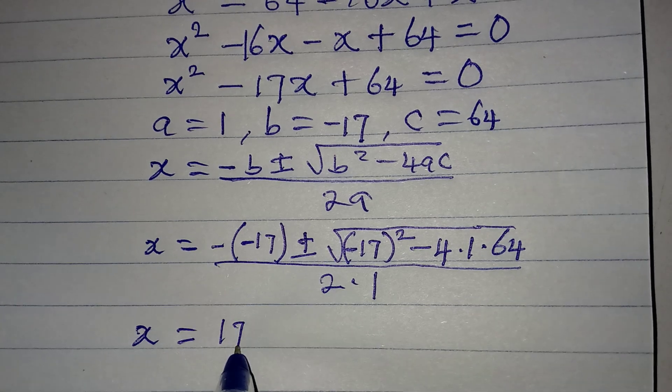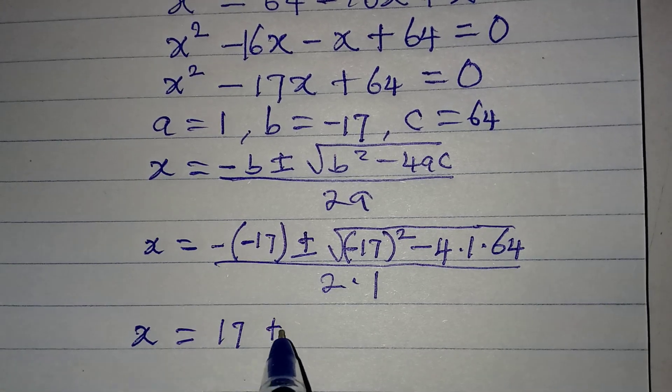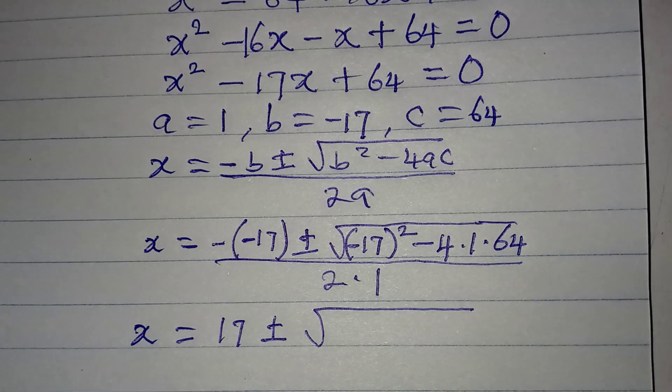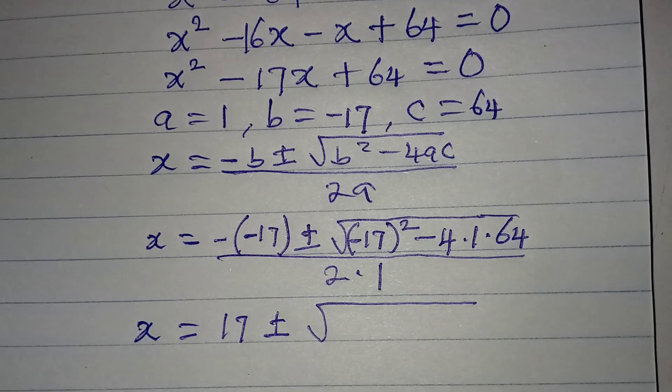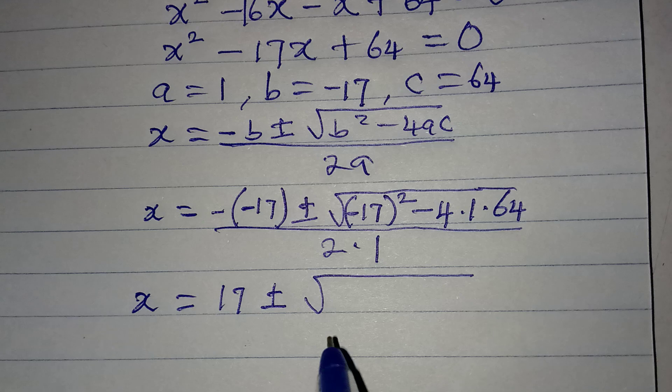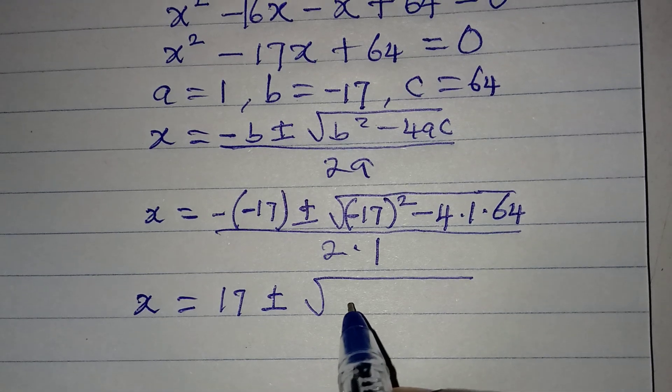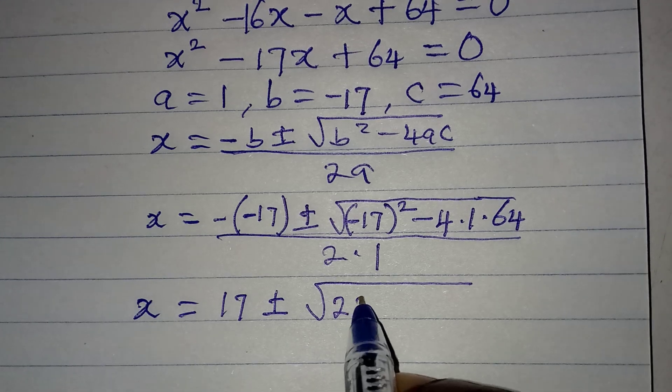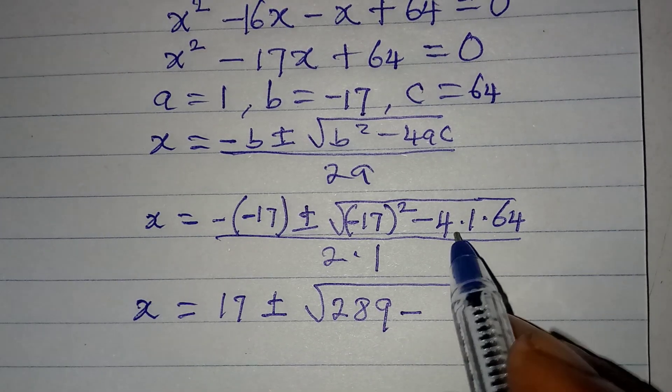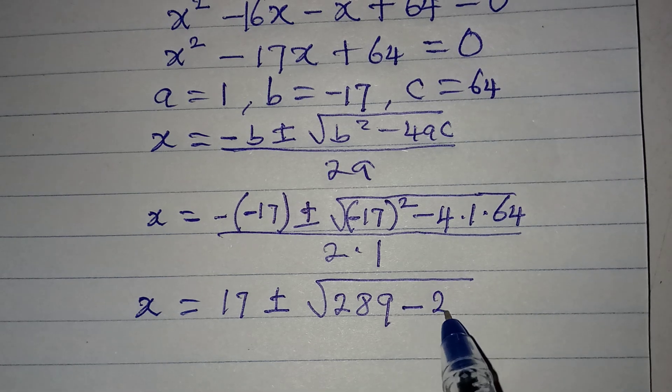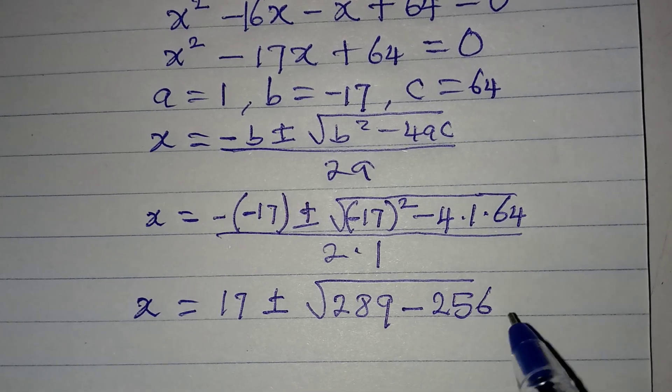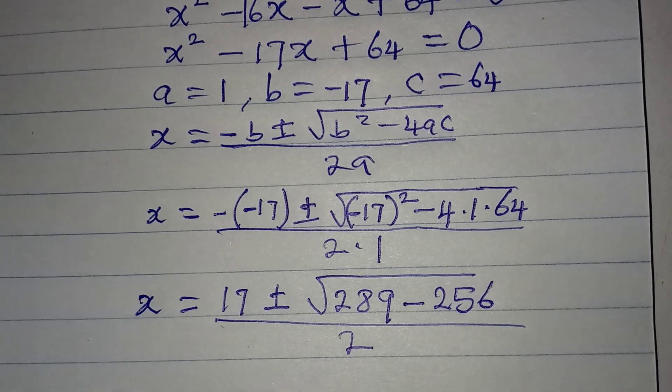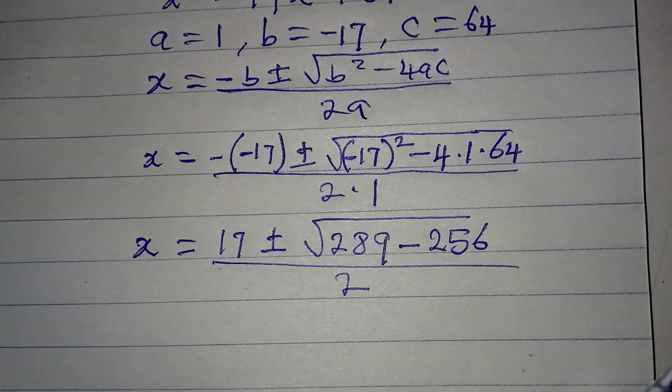x will now be 17 plus or minus, square root of, what is minus 17 squared? Minus 17 squared is positive 289, minus 4 times 1 times 64 is 256, and then the whole of this is over 2.